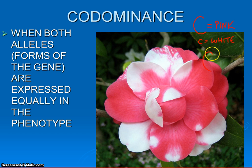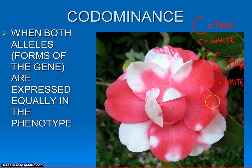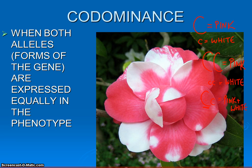Now obviously an individual that has two big Cs would clearly have to be pink in color. What about an individual who has two little Cs? Well, clearly it's got two instructions for white — it must be white in color. But what about a heterozygous individual with two different forms of that allele? The old-fashioned way, we would have said big C was dominant and it would have been pink. But notice here, both of these alleles show up — they're both expressed. This comes out pink and white.